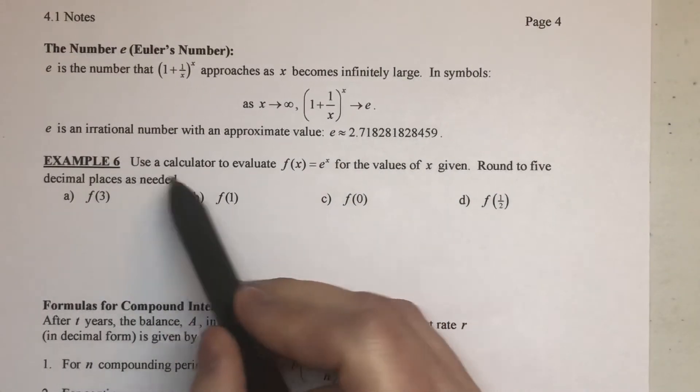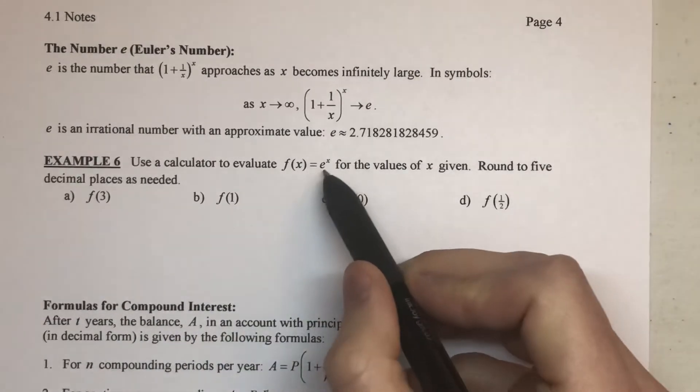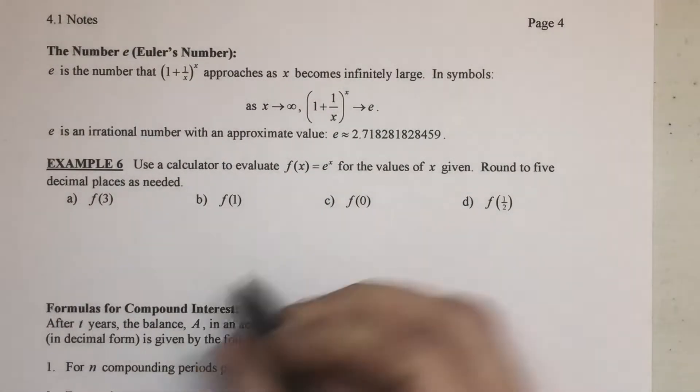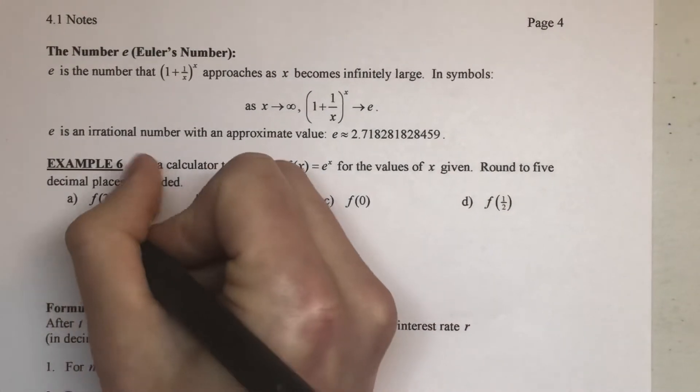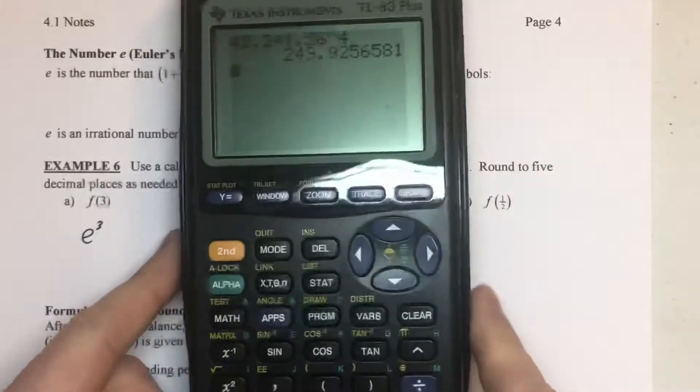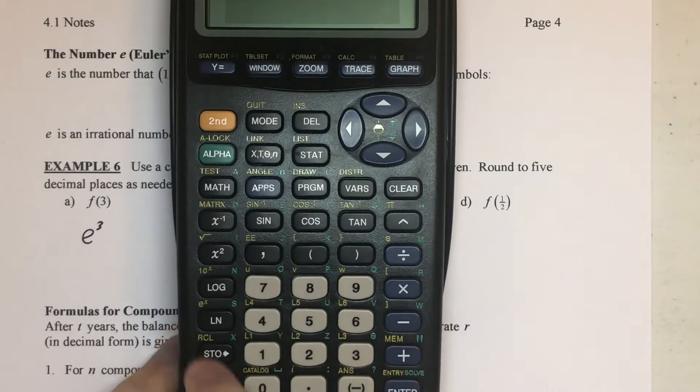And so real quickly here, just to get used to your calculator, we're going to evaluate the function f of x equals e to the x for a couple values of x. So for f of 3, we're saying x is 3. So we want e to the third. And again, on your calculator, whether it's a graphing calculator or not, if it's a scientific calculator,